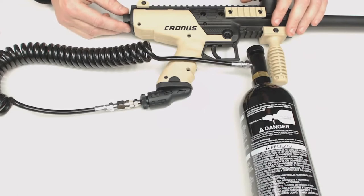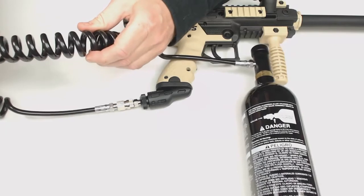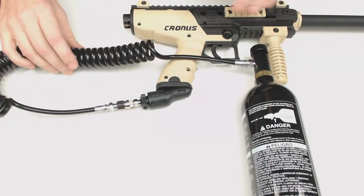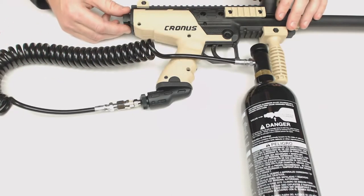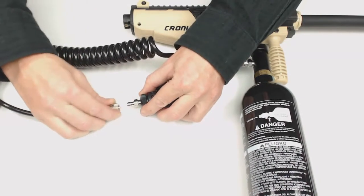These remote lines will all have coil hoses. This allows them to stretch out with your arm. It also keeps the hose close to your body so that it doesn't snag on trees and brush around you.